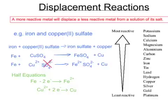The sulfate ions have not changed in the reaction, and therefore we can consider these as spectator ions. So the actual reaction is between the Fe atoms and the copper ions to make Fe ions and copper atoms. We can see that the iron atom has lost two electrons to form an iron 2+ ion, whereas the copper 2+ ion has gained two electrons to form a copper atom.